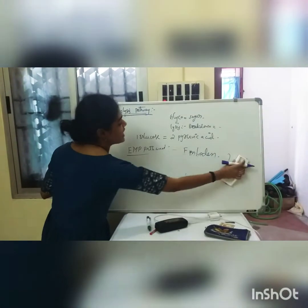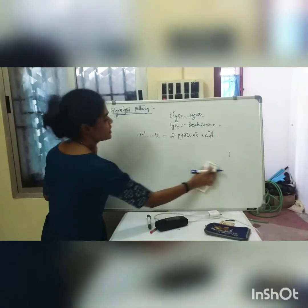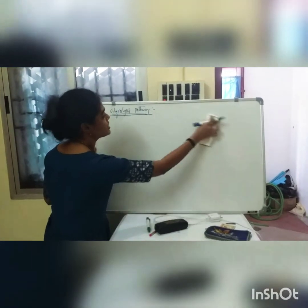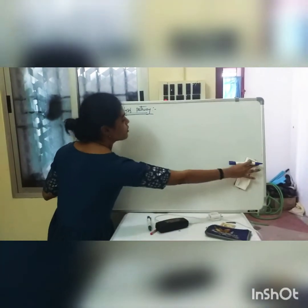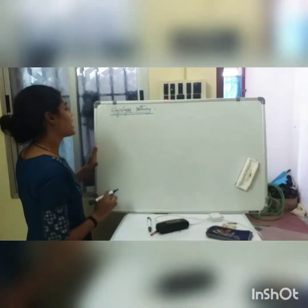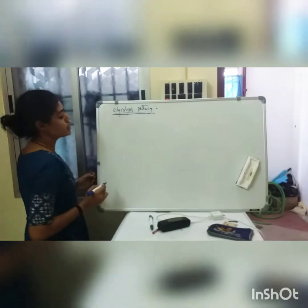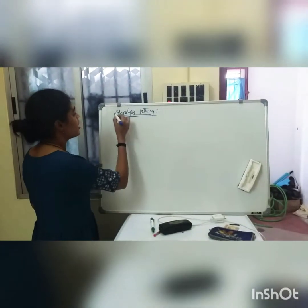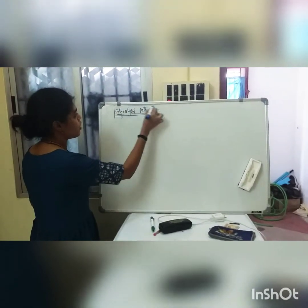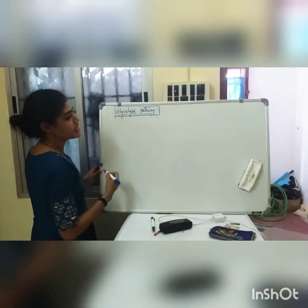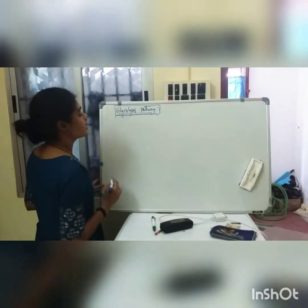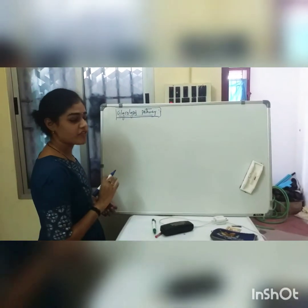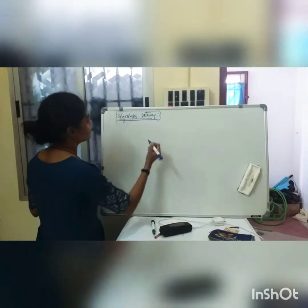Where does glycolysis occur, and under what conditions? Glycolysis occurs under both aerobic and anaerobic conditions. This process takes place in the cytosol or cytoplasm of the cell.